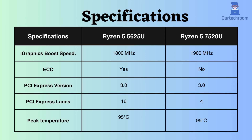The Ryzen 5 5625U supports ECC, whereas the Ryzen 5 7520U does not. Therefore, the Ryzen 5 5625U is suitable for critical systems like workstations and servers. Both processors support PCI version 3, but the number of PCI lanes supported by the Ryzen 5 5625U is greater than that of the Ryzen 5 7520U. Consequently, the Ryzen 5 5625U can connect to more PCI devices.